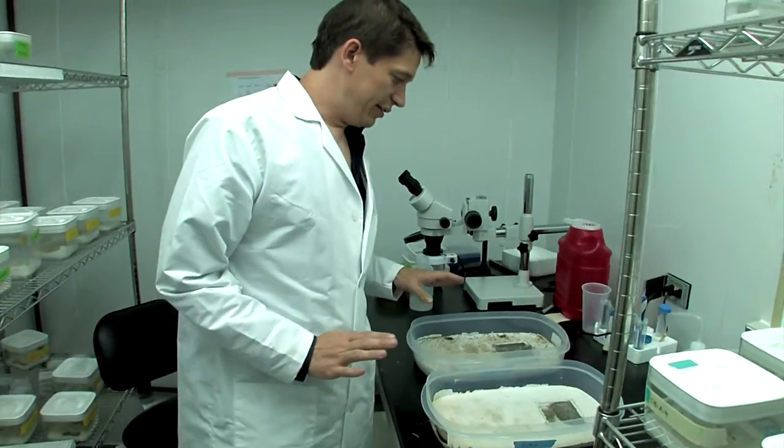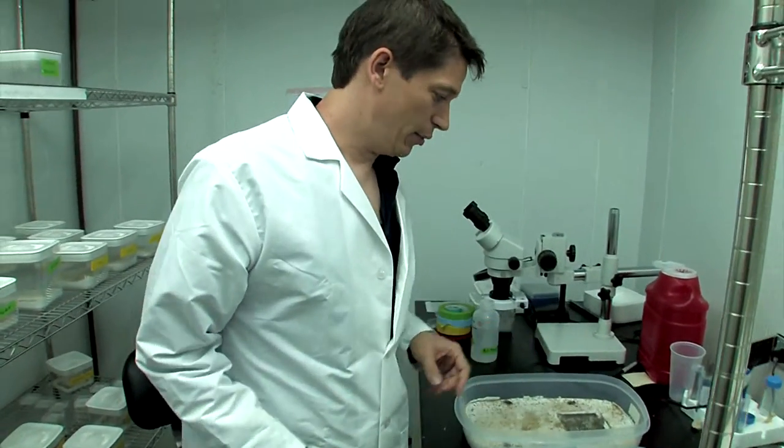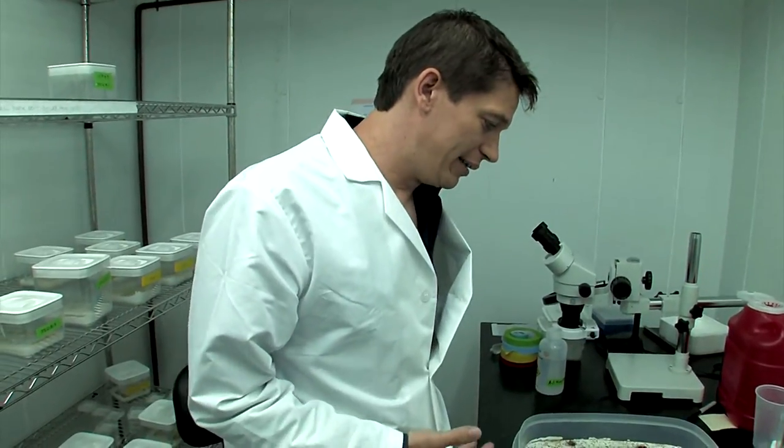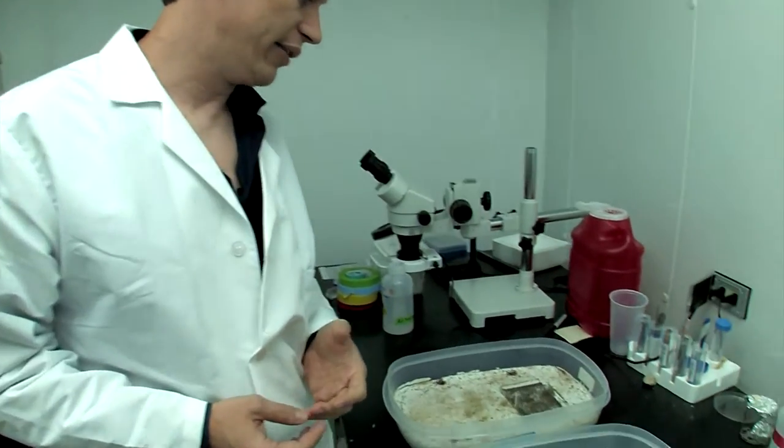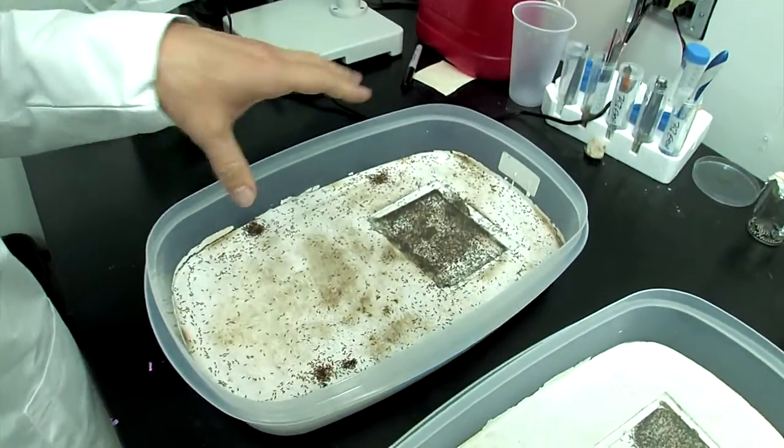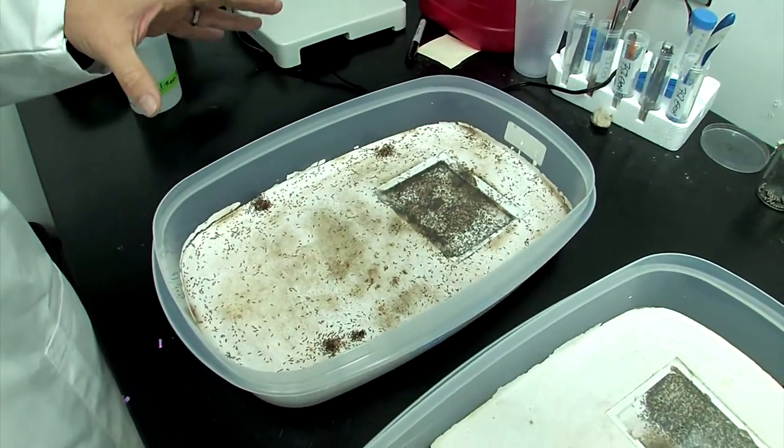This is the species we study here in the lab, Cerapachys biroi, our little model organism. The species has three great advantages over most other social insects. For one, the species is clonal, which means that all the individuals inside the colony are genetically identical.